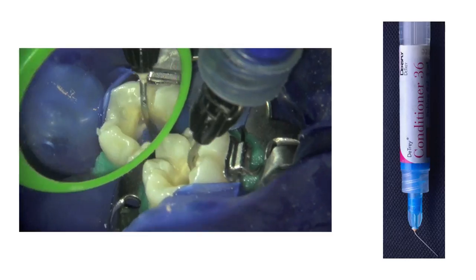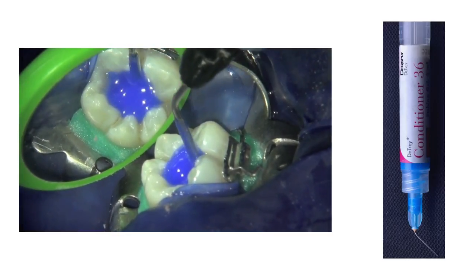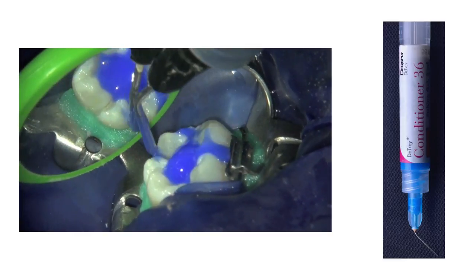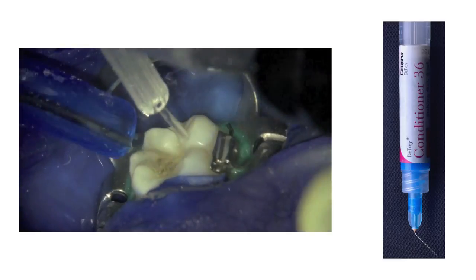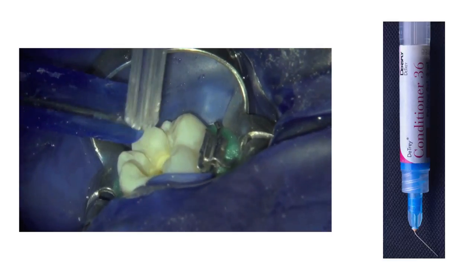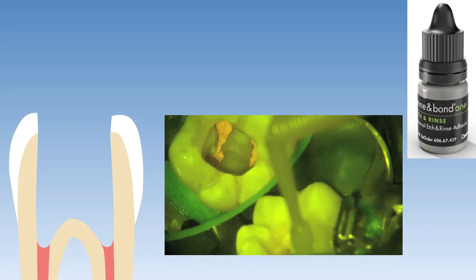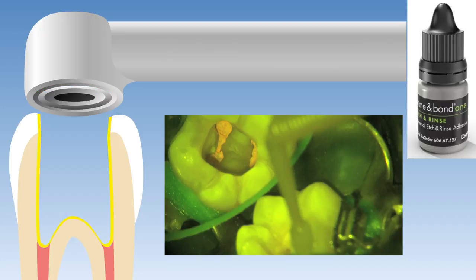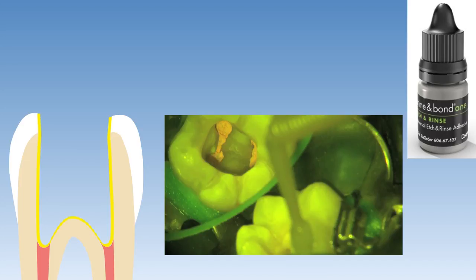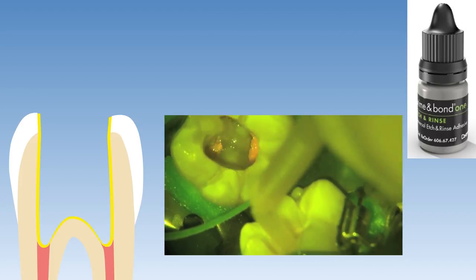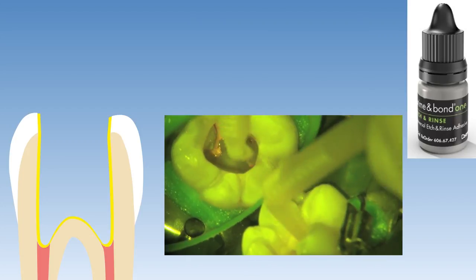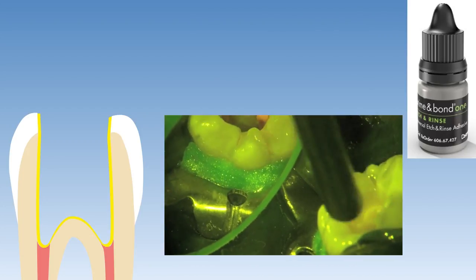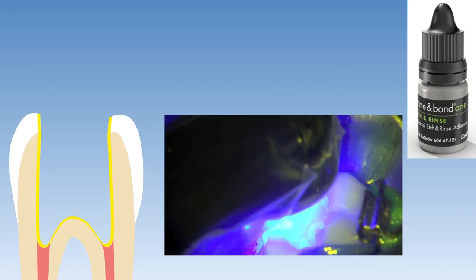The enamel and dentine was etched with phosphoric acid for 15 seconds before the etchant was rinsed off thoroughly with water and lightly air dried with compressed air. A micro brush saturated with Prime&Bond etch-and-rinse was used to infuse the bonding resin into the etched enamel and dentine surfaces for approximately 10 seconds, before it was light cured for 20 seconds after evaporation of the solvent. Here we can see this step being performed clinically — bonding resin application, infusion into the etched surfaces, solvent evaporation, and finally the light curing step.